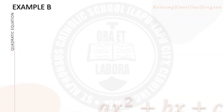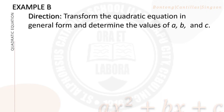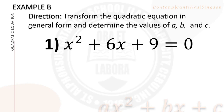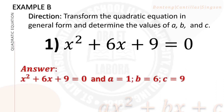In our next set of examples, we are going to transform the quadratic equation into its general form and determine the values of a, b, and c. Number 1: x squared plus 6x plus 9 equals 0. The general form is x squared plus 6x plus 9 equals 0 — it is already in general form — and the values are a equals 1, b equals 6, c equals 9.